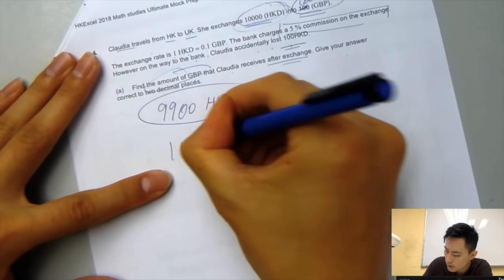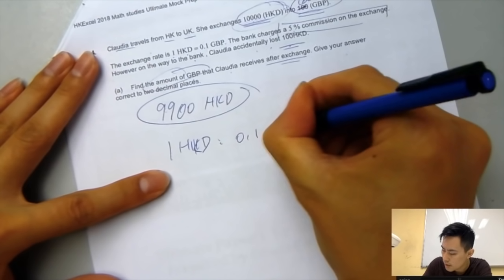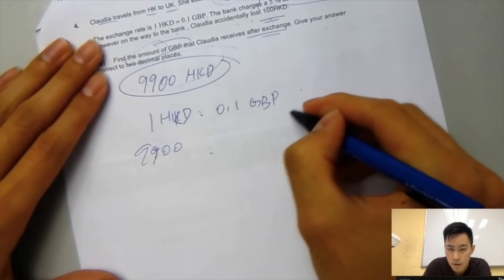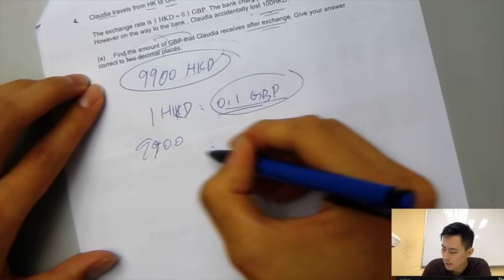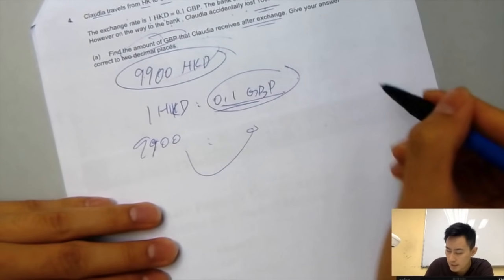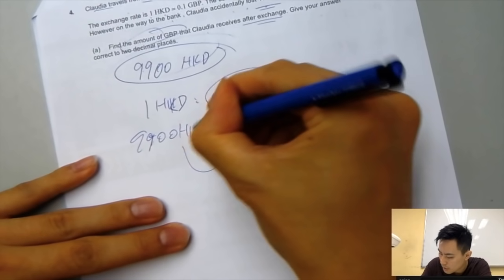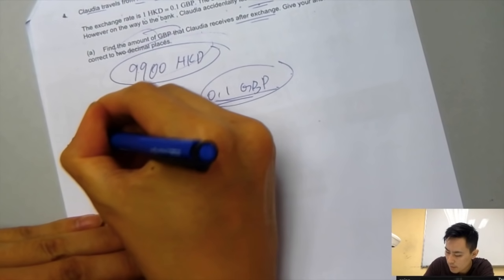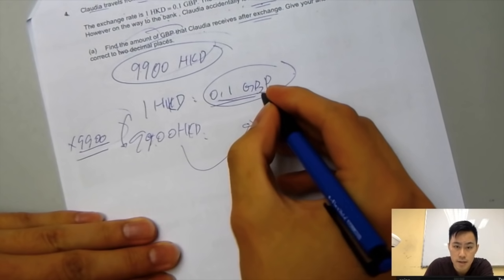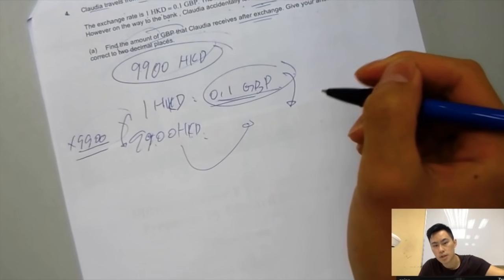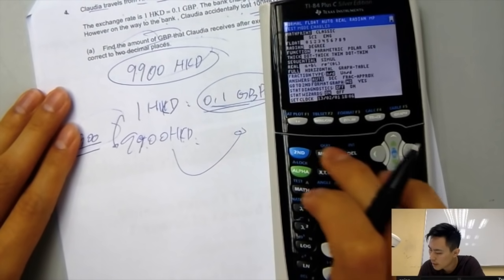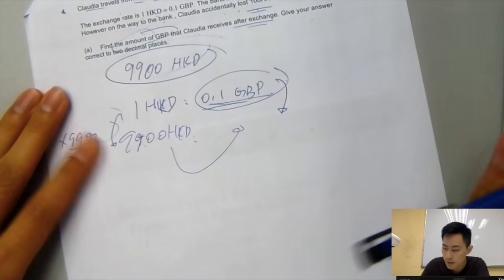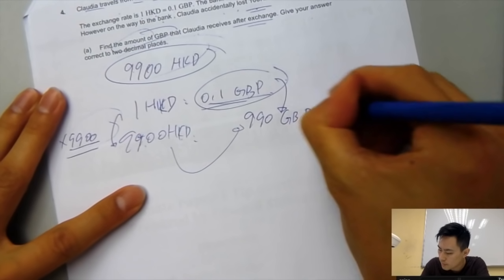Next, because we know that the rate is 1 HKD to 0.1 GBP, we have 9,900. How do you turn it to the pounds? Basically, all you need to do is just look at the multiplier here. 1 to 9,900 HKD, it's multiplying by 9,900. So you multiply on the left-hand side, then you need to be multiplying on the right-hand side as well. You will have the 9,900 times 0.1, so it's 990 GBP.